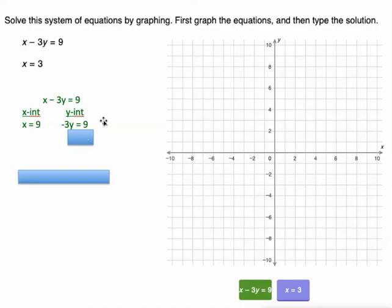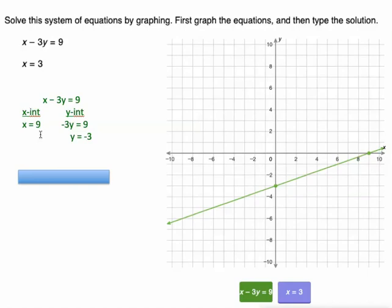That doesn't mean the y intercept is 9. We have to solve this equation by dividing both sides by negative 3. And we get y equals negative 3. 9 divided by negative 3 is negative 3. Alright, so now I can plot those two points. I said my x intercept was 9. That's over here. And my y intercept is negative 3. There it is.